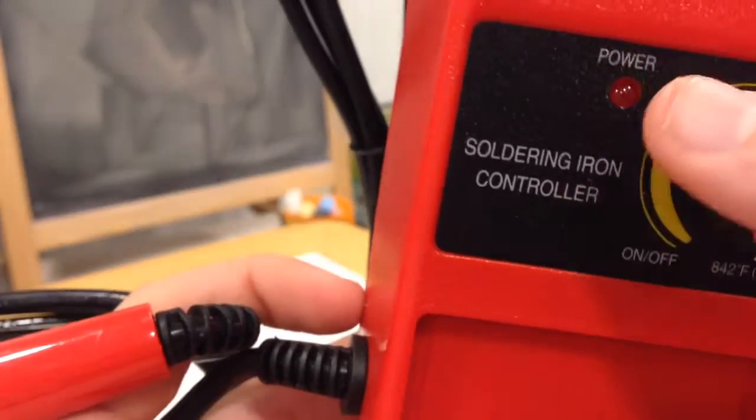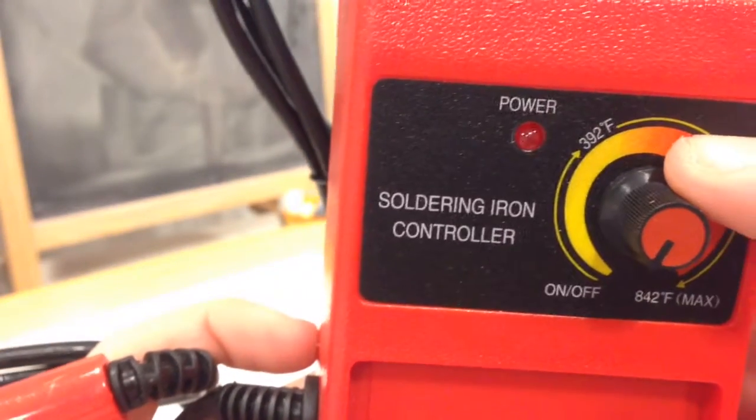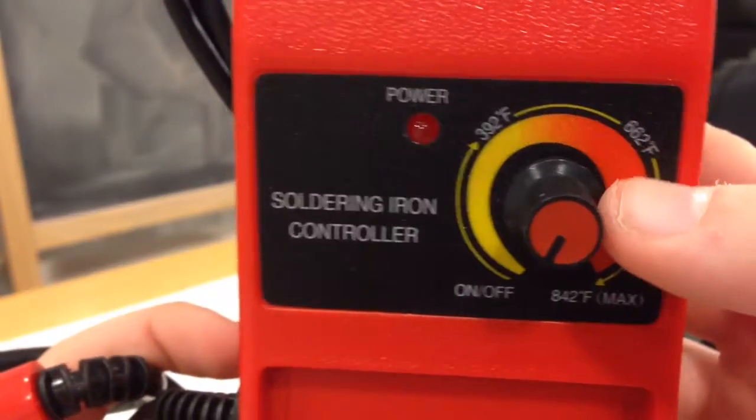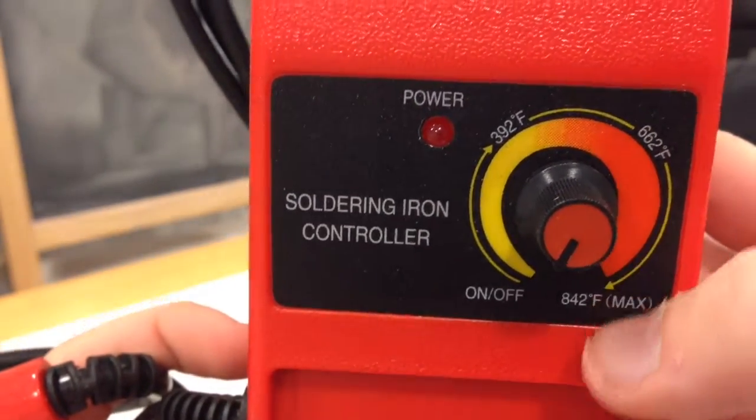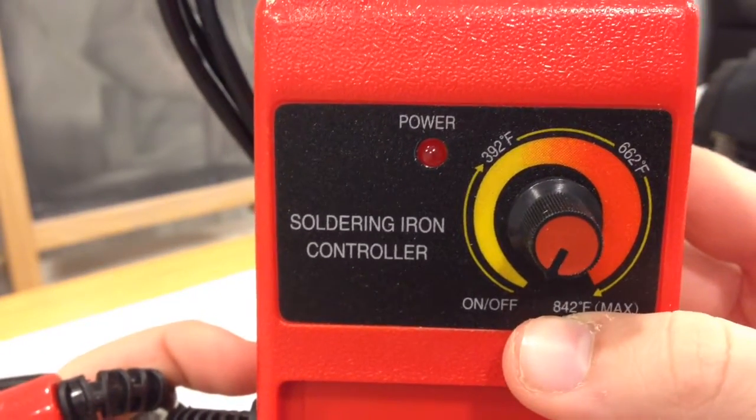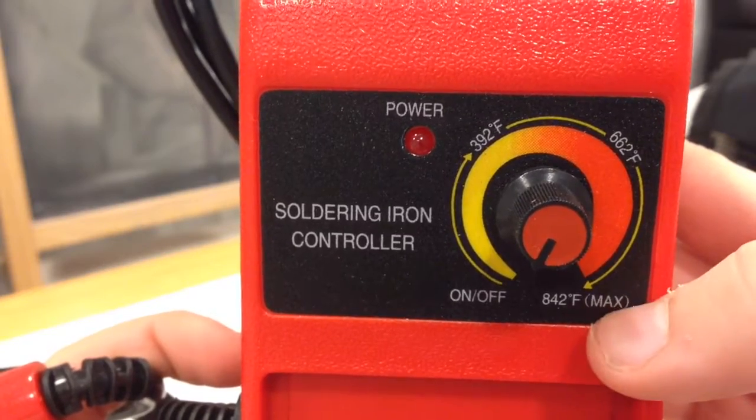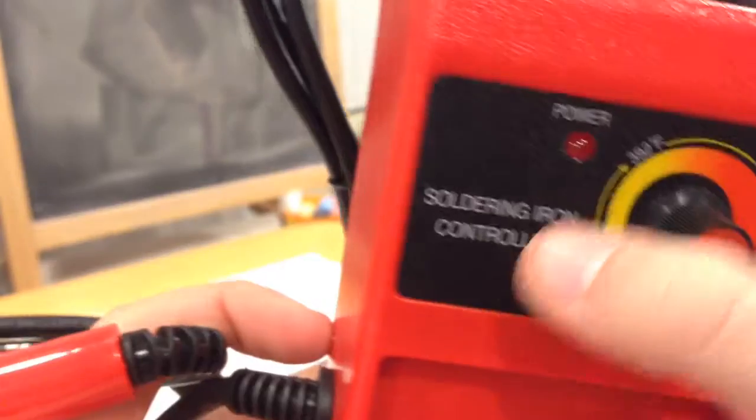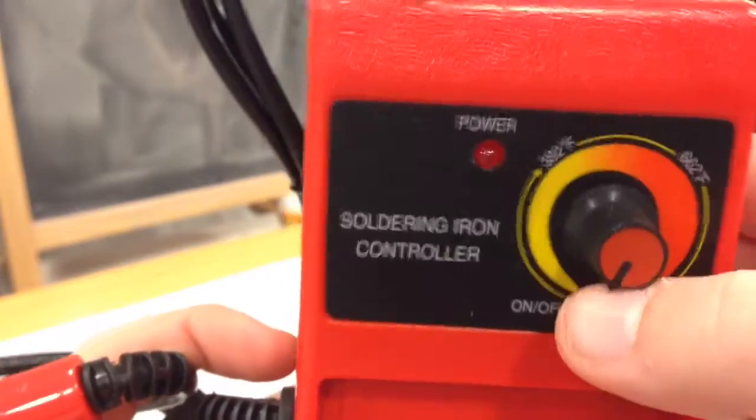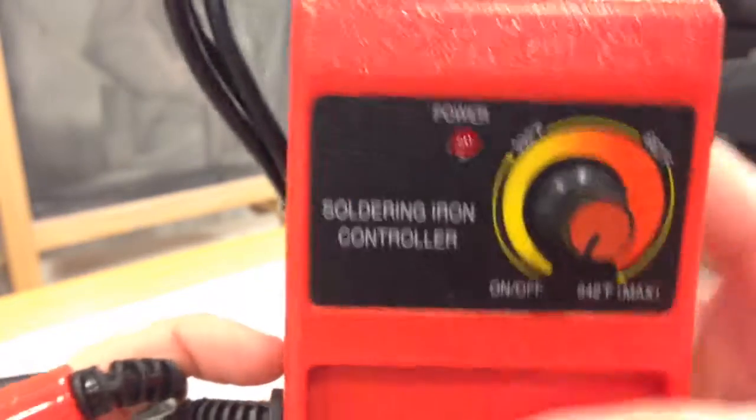As you turn it on you can make it go three hundred and twenty nine degrees Fahrenheit to six hundred and sixty two degrees Fahrenheit and eight hundred and forty two degrees Fahrenheit to the max, all the way from yellow to red past the three hundred and ninety two degrees Fahrenheit.